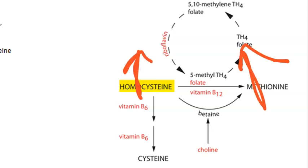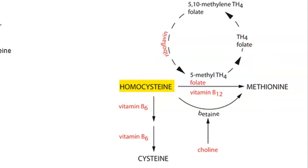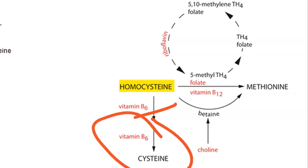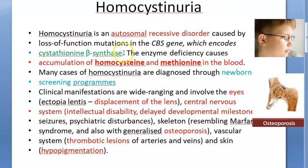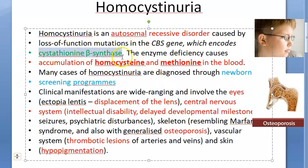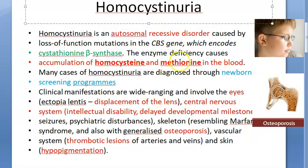The enzyme that is missing is cystathionine beta synthase. Treatment involves vitamin B6 along with cysteine supplementation, and a methionine-restricted diet. Vitamin B12 and folic acid are also involved, particularly in type 4. The key point: the enzyme is cystathionine beta synthase, give cysteine, restrict methionine, and give pyridoxine.